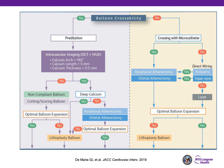If you cannot cross the lesion with the balloon, more often than not you can directly wire the lesion with a rotowire or viperowire. 9 out of 10 times, I'm direct-wiring these lesions with the atherectomy wire. If you cannot wire or cross the lesion, you can consider laser atherectomy. After atherectomy is performed, you still want to ensure optimal balloon expansion before proceeding to stent placement. If the balloon is still not expanding, you do have the option of a lithoplasty balloon.